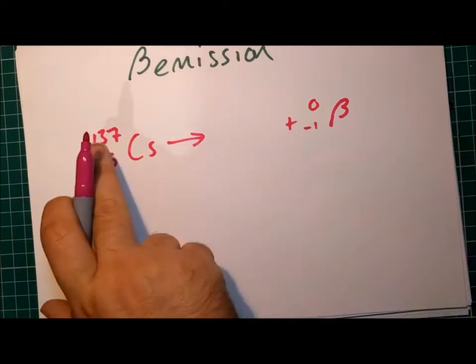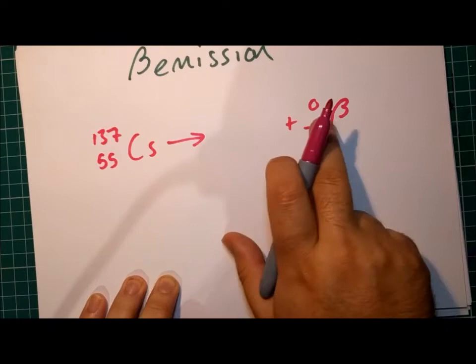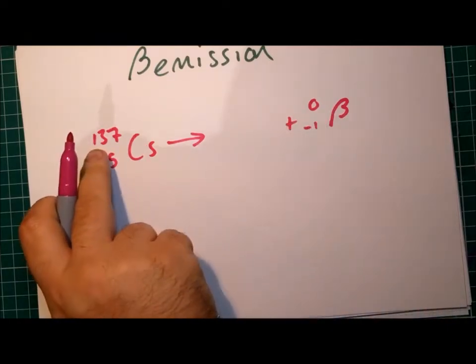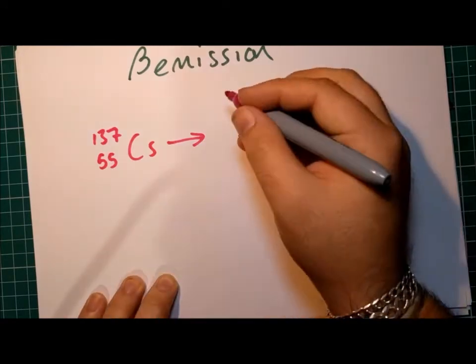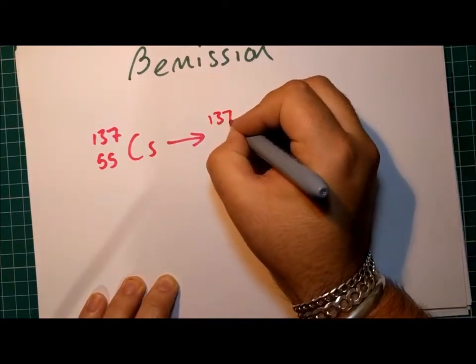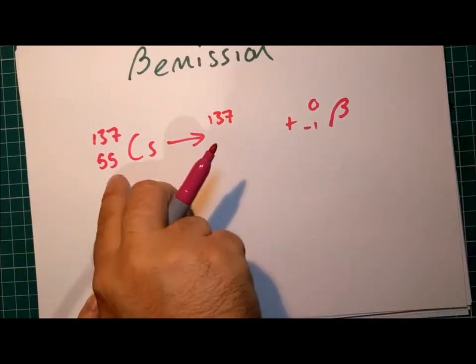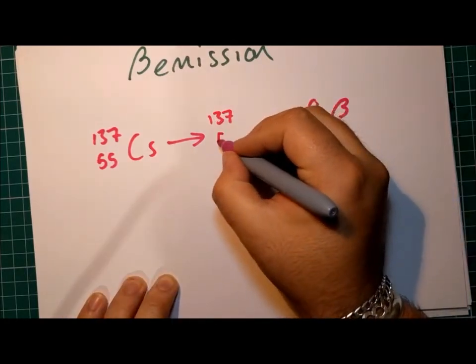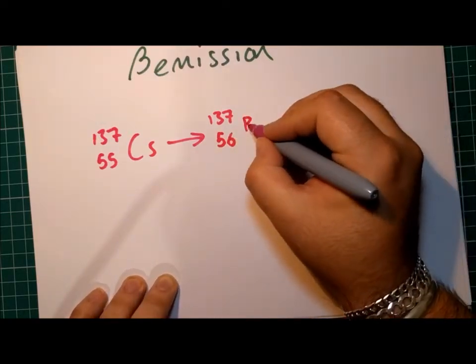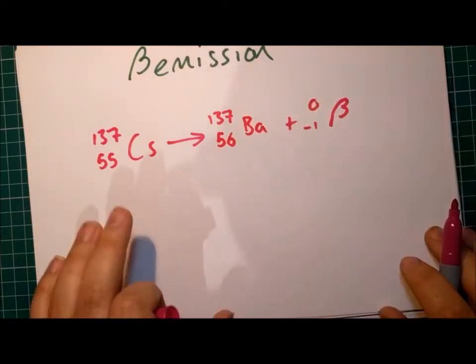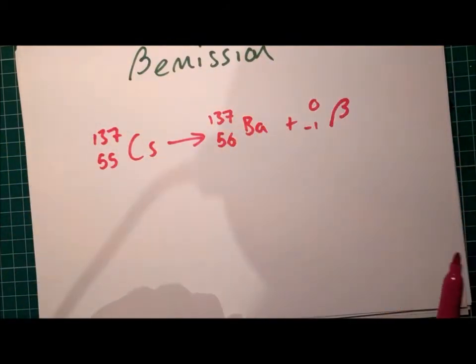So what is left behind? Well, we said before that the total mass on this side is going to equal the total mass on this side. So what plus zero makes 137? So that gives us 137. And what plus minus one makes 55? Well, that's going to be 56. That's one way to work it out. This particular element is barium. That's one way to work it out using those conserved charge and conserved mass rules.